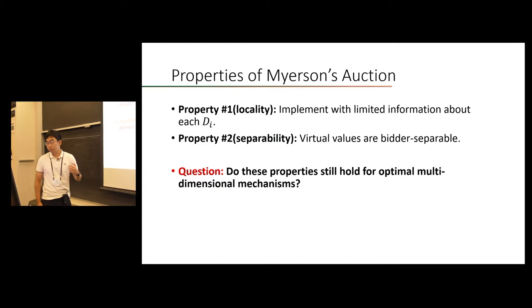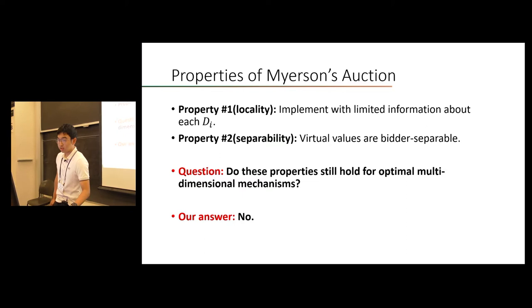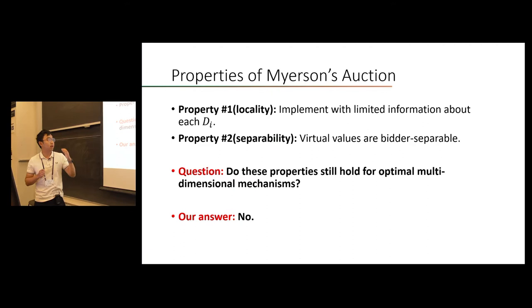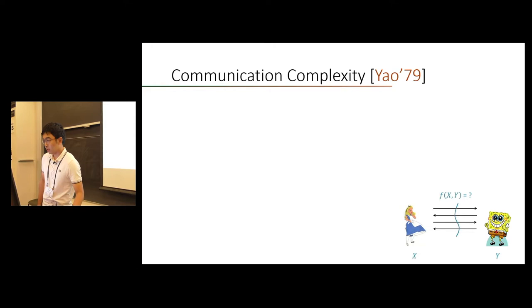The second property we call bidder separability: the virtual values are bidder separable. phi_i does not depend on the other bidders' prior distributions — it only depends on the prior distribution of the buyer itself. So we want to ask: do these remarkable properties still hold in general for optimal multidimensional mechanisms? Our paper answered both of these problems in the negative.